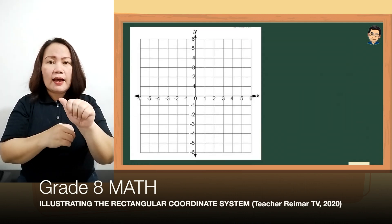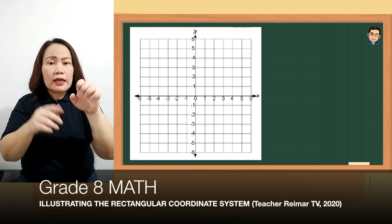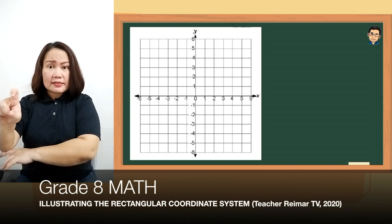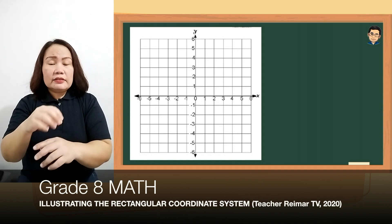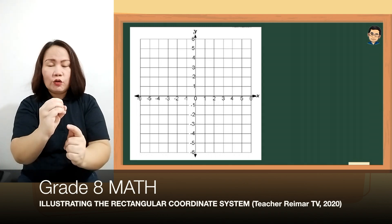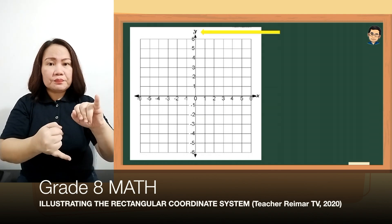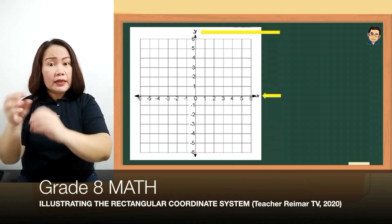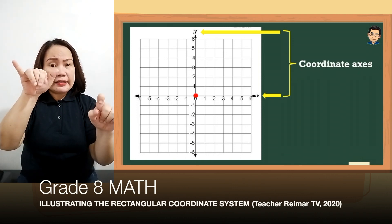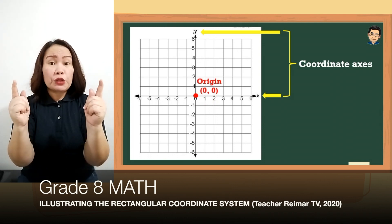Para maging aware kayo sa mga terms, let's look at the rectangular coordinate plane. Yung vertical axis, yung patayo, is what we call the y-axis. Yung pahiga naman, the horizontal axis, is the x-axis. Matatagpuan nyo dyan yung 0, yung tinatawag na origin, na kung saan nag-meet yung dalawang number lines. Meron din tayo dyan yung mga negative integers, positive integers, as well as 0. Ang tawag natin dun sa y-axis and x-axis ay coordinate axis. Yung point of intersection ng dalawang perpendicular number lines ay tinatawag nating origin, na kung saan yung coordinates niya is (0, 0).